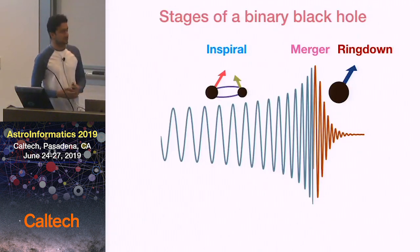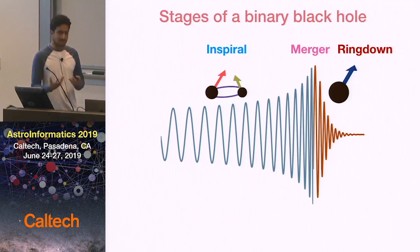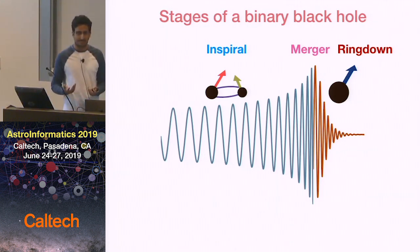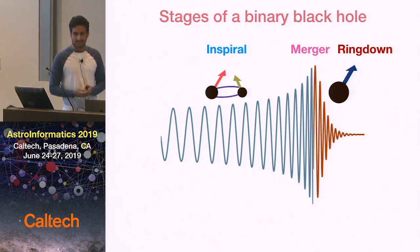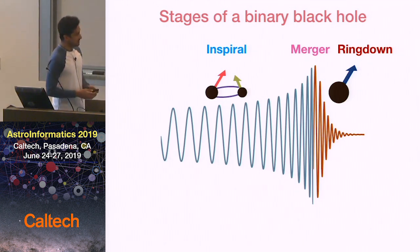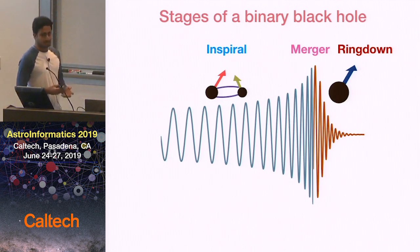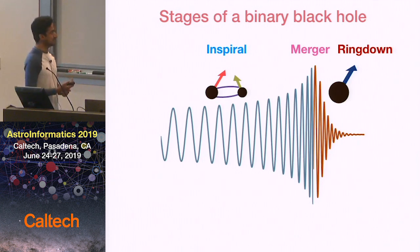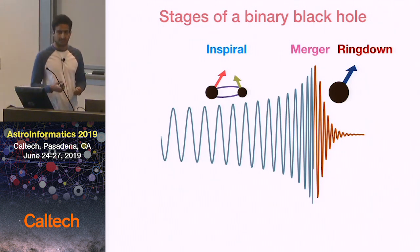In particular, I'll talk about binary black holes, which are two black holes that are orbiting each other, and they're also the most abundant sources for gravitational wave detectors such as LIGO and Virgo. To understand the signals that are seen by these detectors, we need a very accurate model that can predict the gravitational waves coming from these sources.